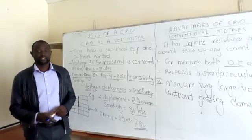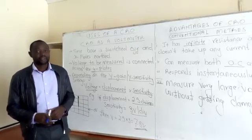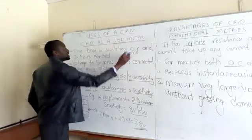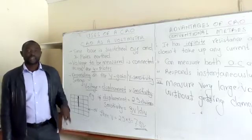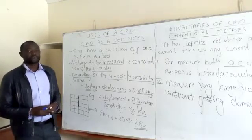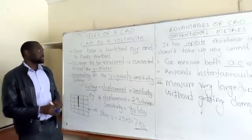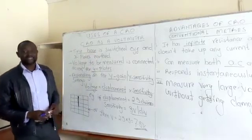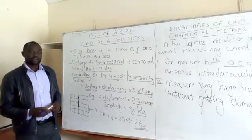We'll go straight to the first one, that is using the CRO as a voltmeter. There are three things you need to do for this CRO to be used as a voltmeter. The first thing is that we should switch off the time base and then add the X plates.